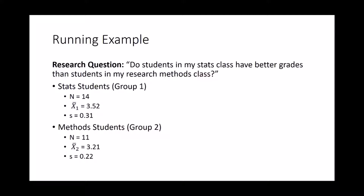For example, this is hypothetical data: a random sample of 14 stats students have a mean GPA of 3.52 and a standard deviation of 0.31. My methods students have a mean GPA of 3.21 and a standard deviation of 0.22, and there are 11 of them. As you can see, the stats students' GPA is higher than the methods students'. But the question is, are they significantly higher? What's the probability that the stats students are significantly higher on their GPAs?